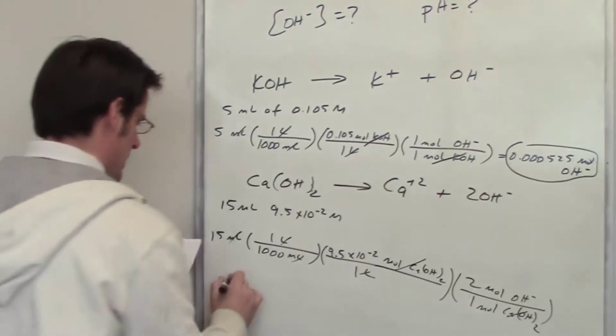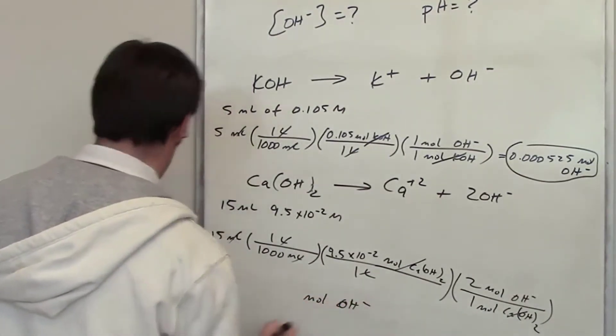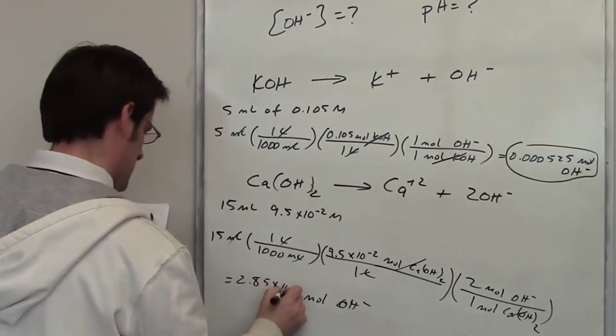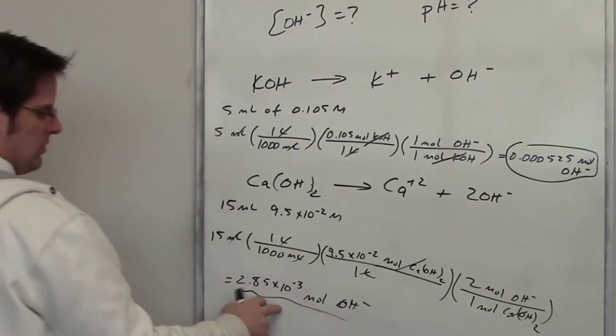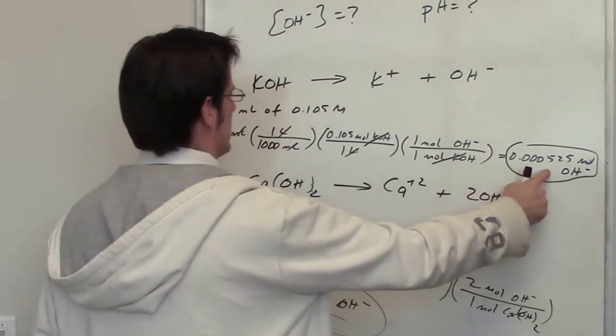I throw that into my calculator and I end up getting the total number of moles of hydroxide from this as being 2.85 times 10 to the negative 3rd. So I have this many moles of hydroxide coming out from my calcium hydroxide. I have that many moles of hydroxide coming out from my KOH.